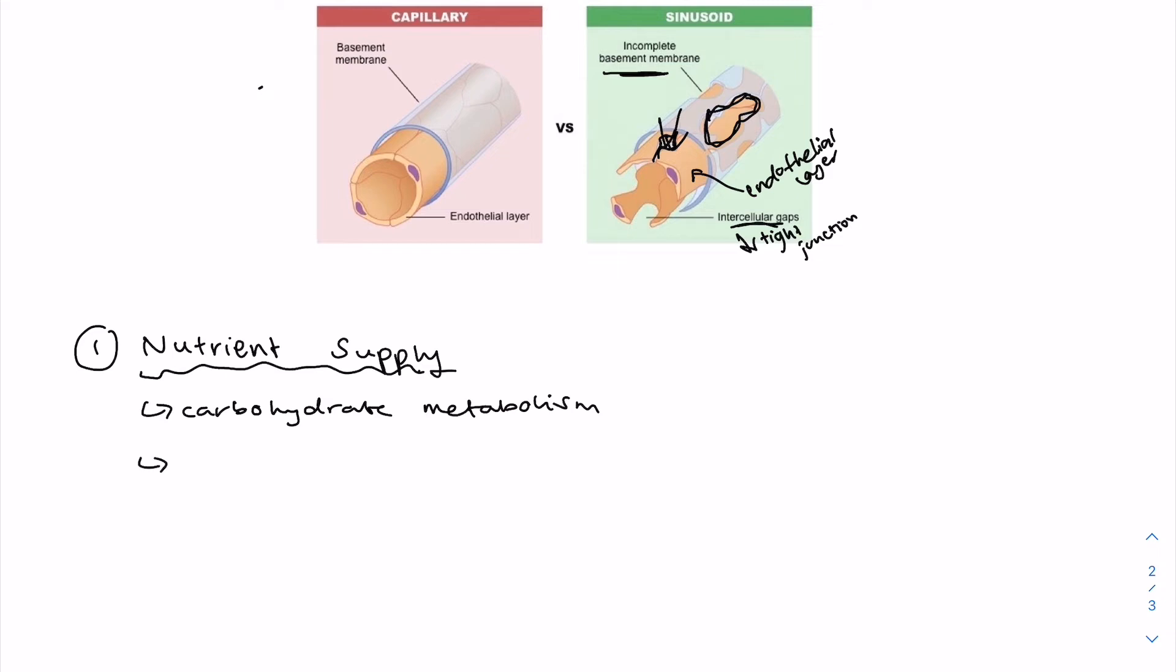Next, we have protein metabolism. The body can't store amino acids, meaning that they must be broken down when they're in excess. So amino acid breakdown releases the amine group, which can't be used by the body and is toxic.